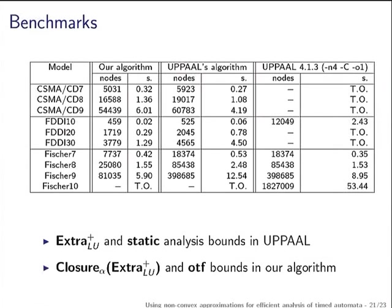In particular, for the FDDI example the DBMs are huge and still the closure inclusion manages to give a good decrease. For the CSMA example there is a small overhead, though not very high. Our prototype cannot handle bigger models, but Uppaal manages to handle them beautifully. We strongly think our algorithm would benefit Uppaal if implemented inside it.